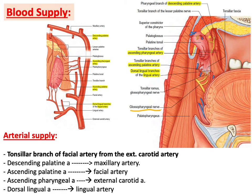The palatoglossus muscle anteriorly and palatopharyngeus muscle posteriorly form two arches. In between lies the tonsillar bed where the palatine tonsil is located. Cranial nerve IX, the glossopharyngeal nerve, has a very close relation to the palatine tonsil and is therefore vulnerable to injury during tonsillectomy.